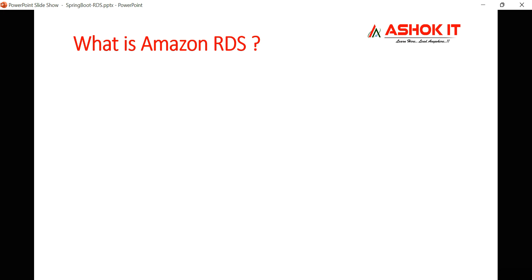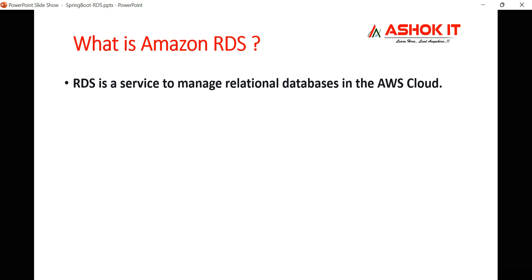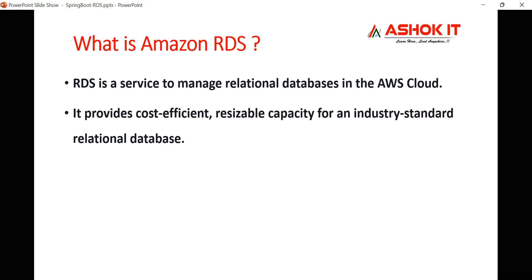What is Amazon RDS service? RDS is a service in the AWS cloud which is used to manage relational databases. Normally, if you want to communicate with your database, you need to set up the database software in your system. You need to take care of security, backup, updates, and many other things to maintain a database for your application.